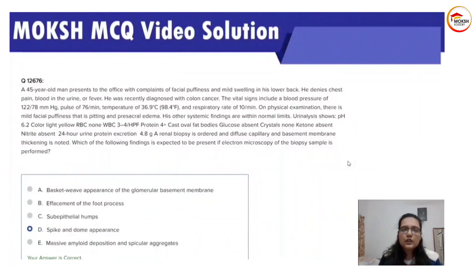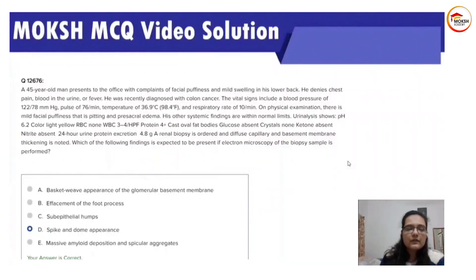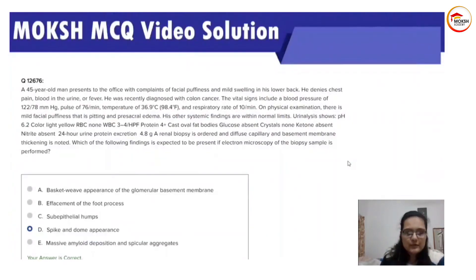Looking for clues — it is a 45-year-old man, so we can rule out minimal change disease. Looking at the answer options: basket weave appearance of the glomerular basement membrane is seen with Alport syndrome, so we are ruling that out.